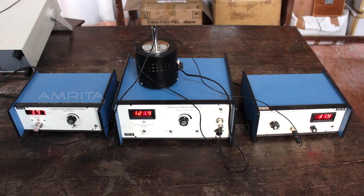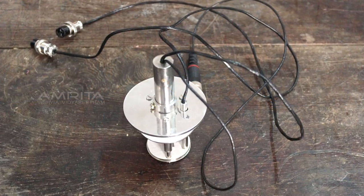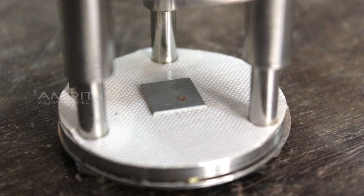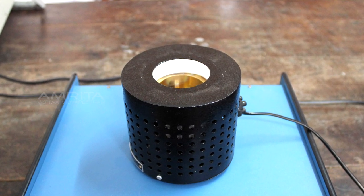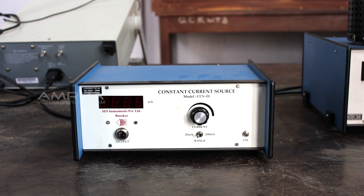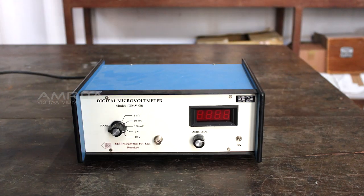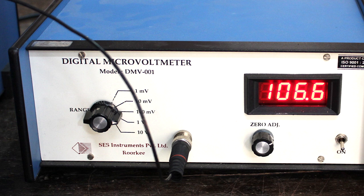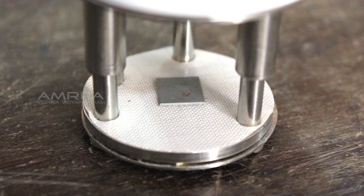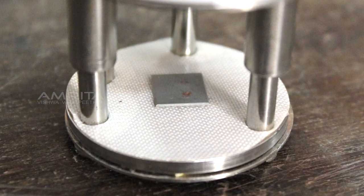Apparatus: The experimental setup consists of probe arrangement, sample, oven measuring 0-200 degrees Celsius, constant current generator, oven power supply, and digital panel meter measuring voltage and current. This method is employed when the sample is in the form of a thin wafer, such as a thin semiconducting material deposited on a substrate.